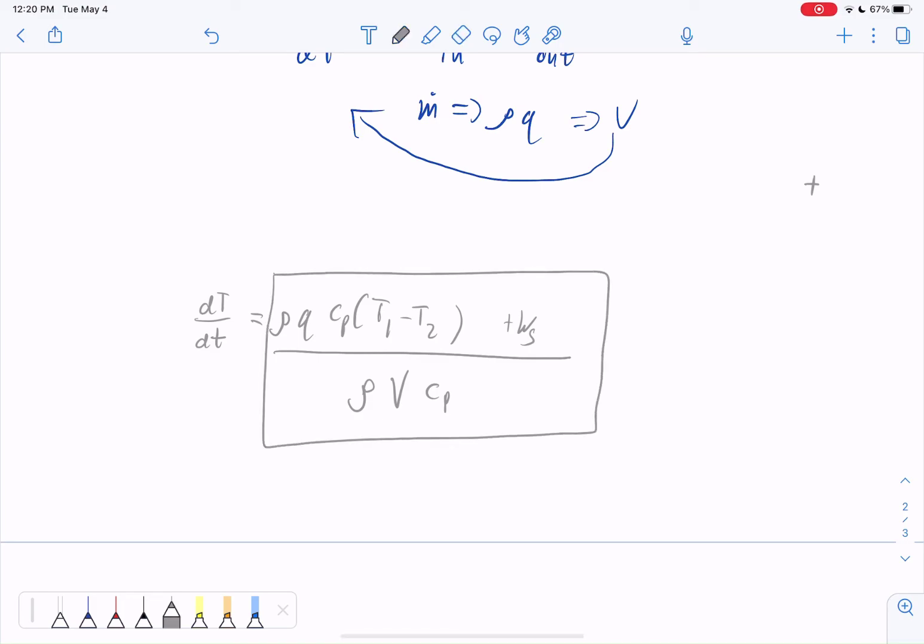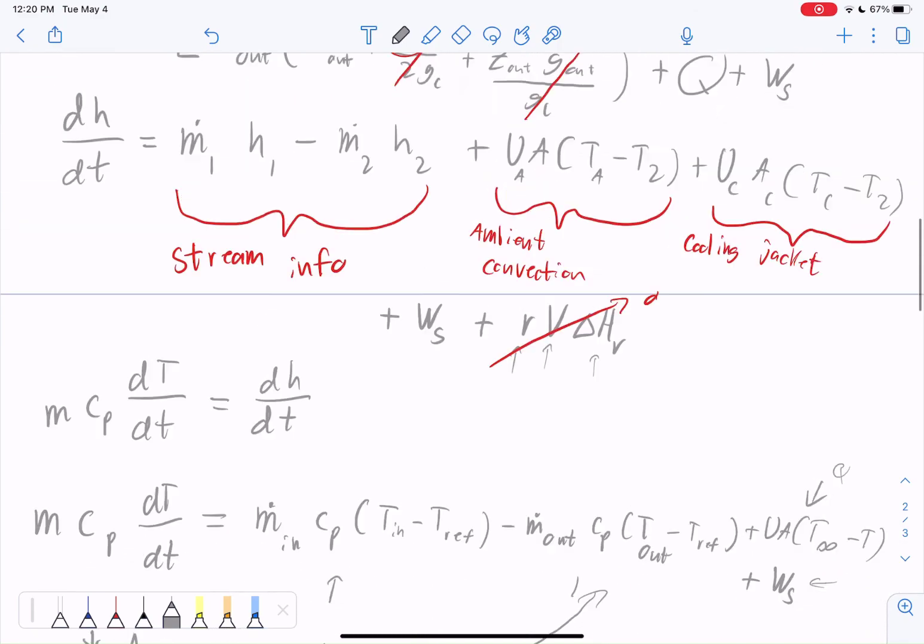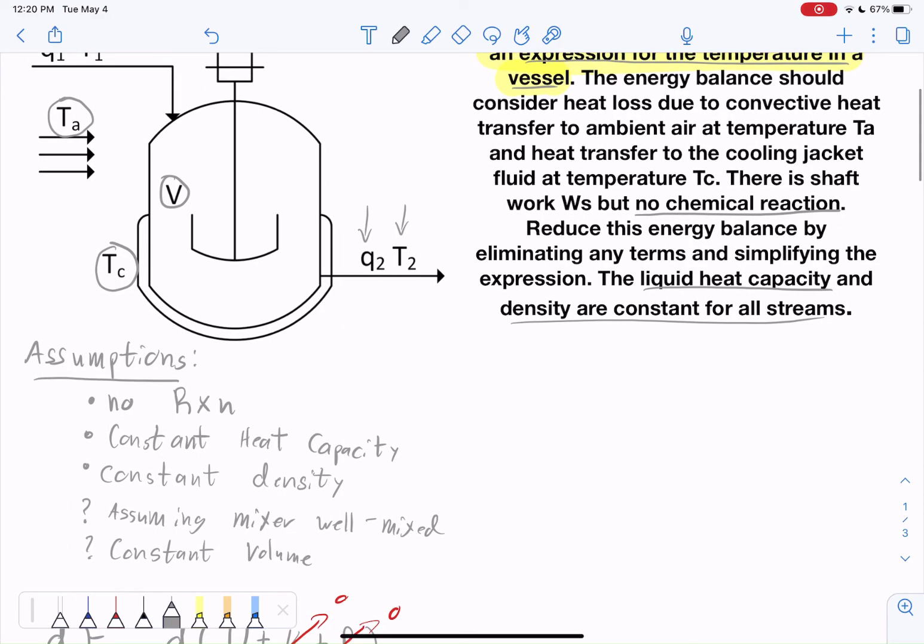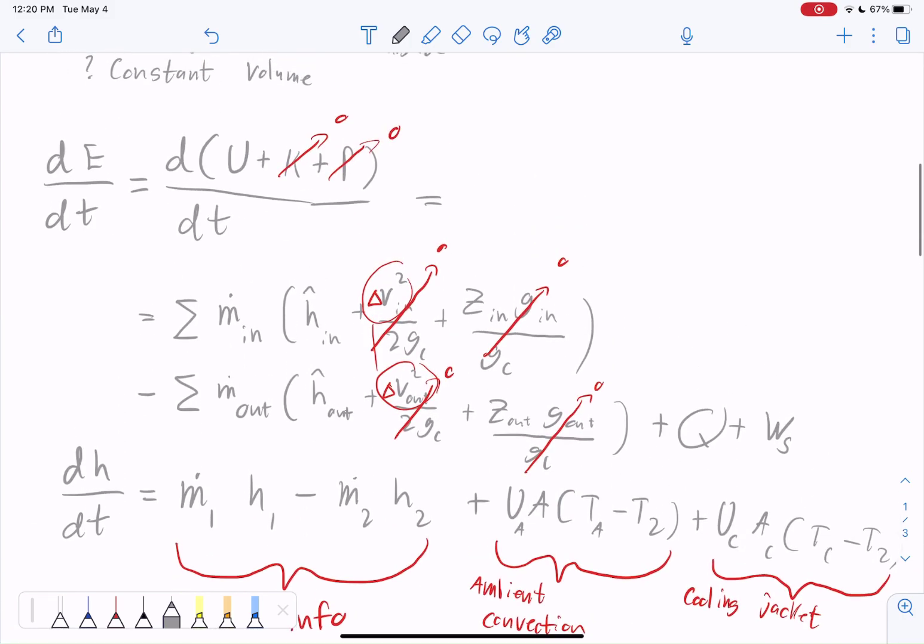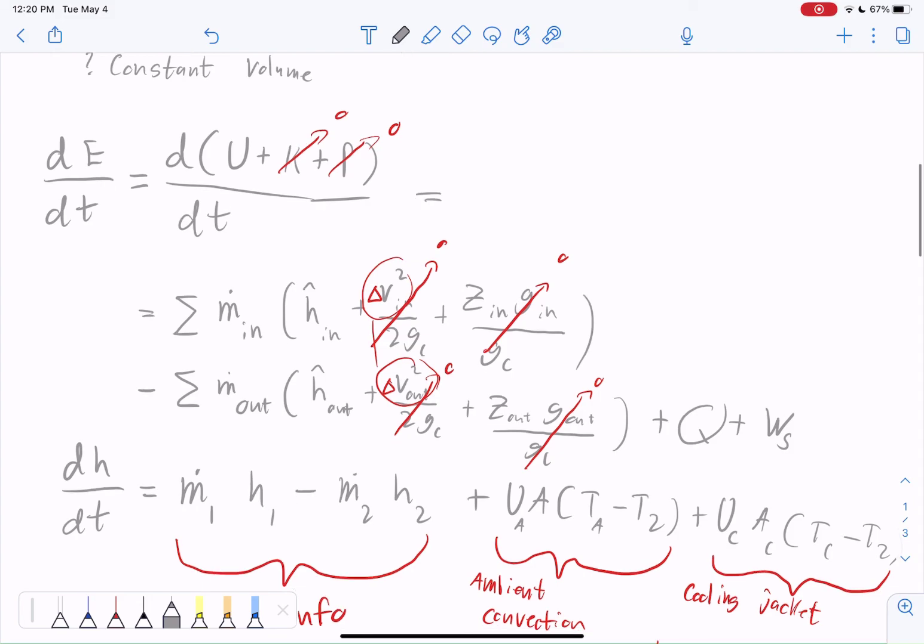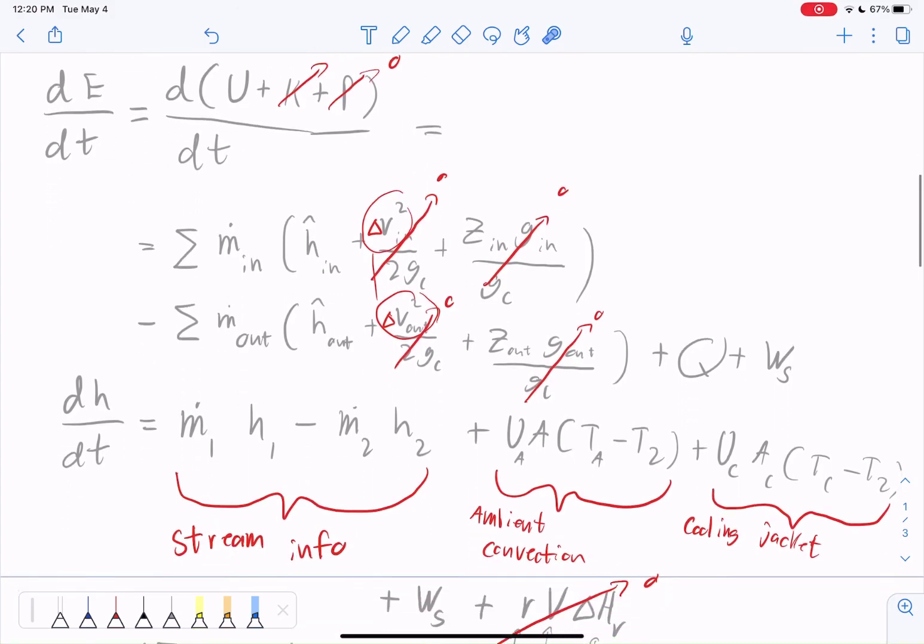Hopefully that made sense. Just to recap, we discussed first what our system is about, what the different assumptions we can make are. We took an energy balance, which is the internal, kinetic, and potential energy. And we said, well, let's assume the kinetic and potential energies don't really change much from start to finish in this process.